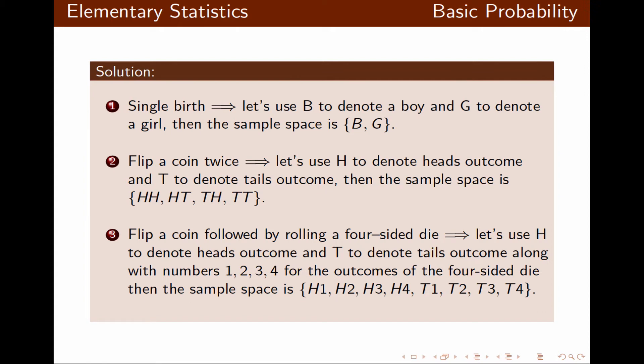Now if we flip a coin followed by rolling a four-sided die, again we use H for heads and T for tails, and the numbers for the four-sided die are numbered from one to four. The sample space would be H1, H2, H3, H4, and T1, T2, T3, T4. There is no other outcome for this procedure.